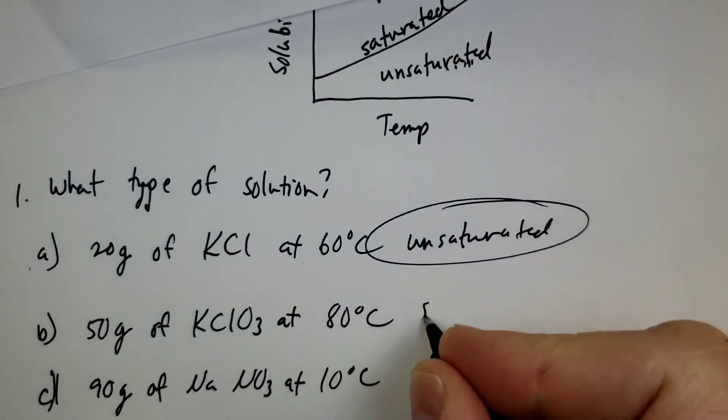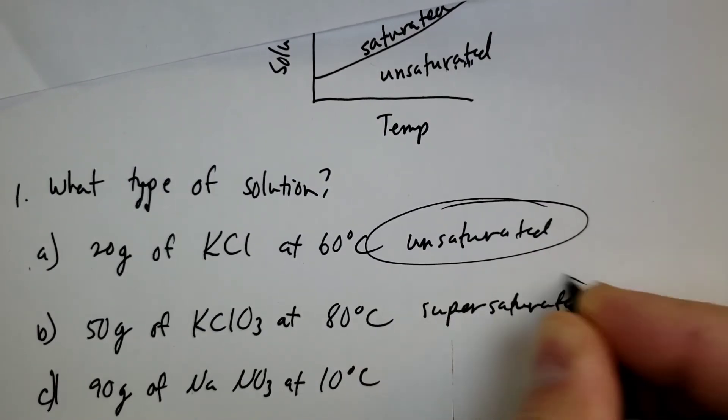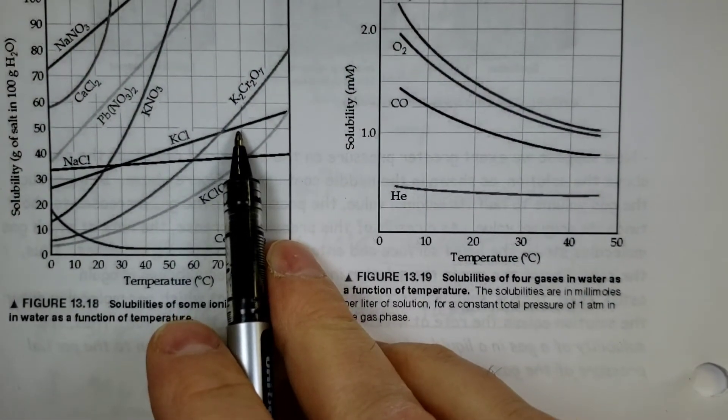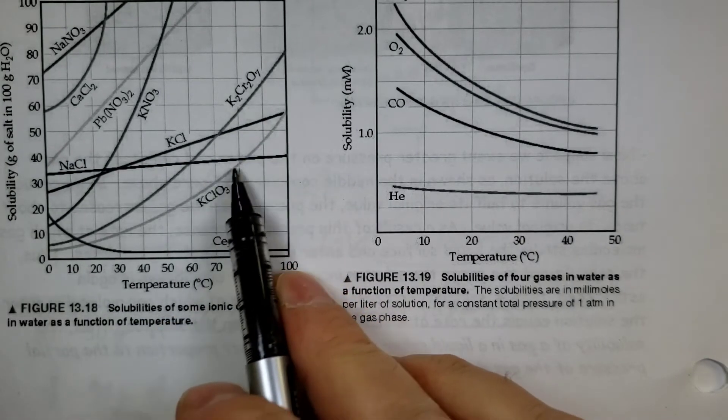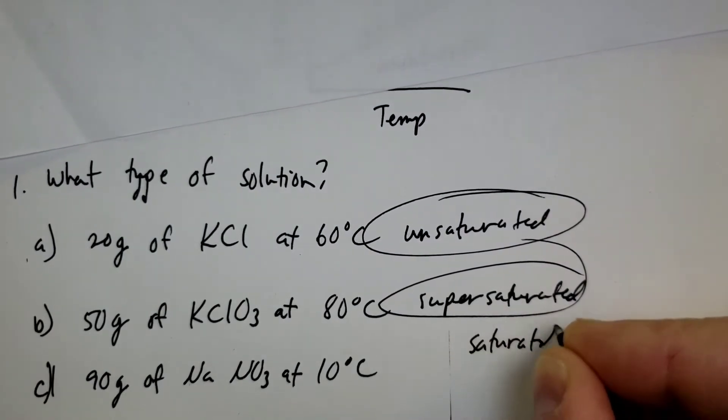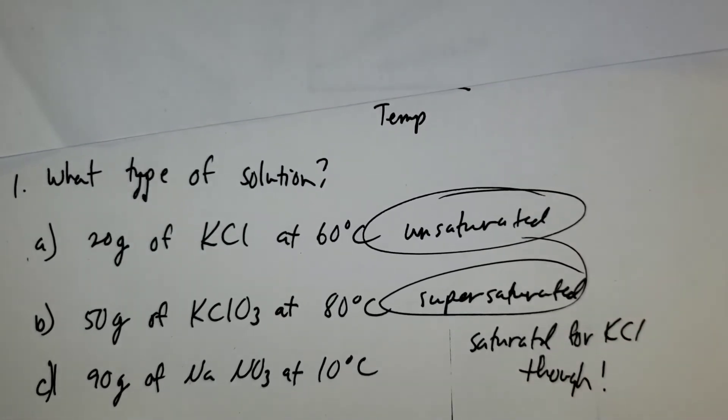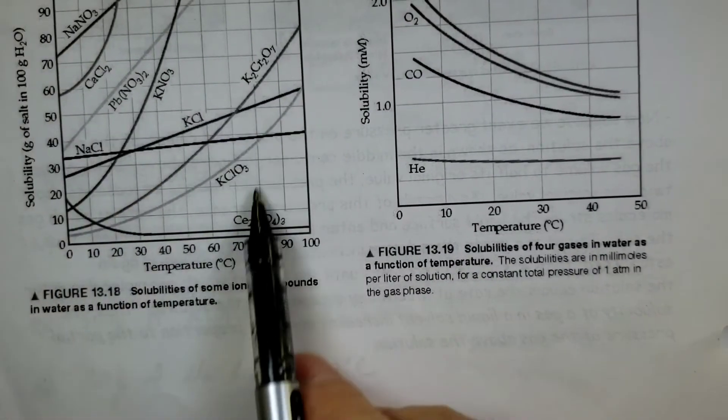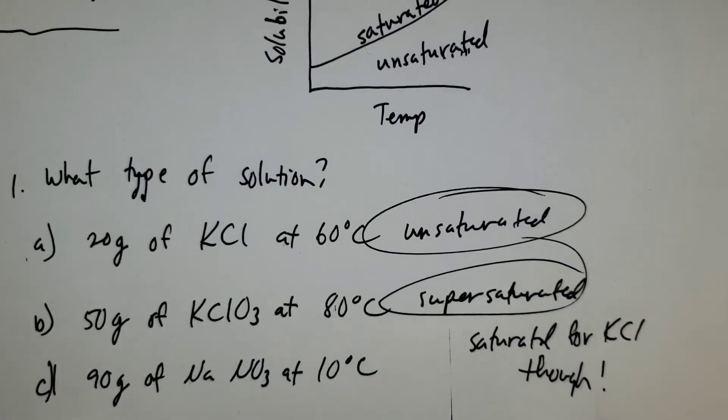So it is supersaturated, because I'm above. See, it falls on the K, if it had been KCl, it'd be saturated, because it's right on the curve. But unfortunately, I asked about KClO3. Maybe let's just say that saturated for KCl though, because 50 at 80, 50 at 80 falls on the KCl curve perfectly.